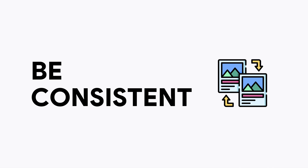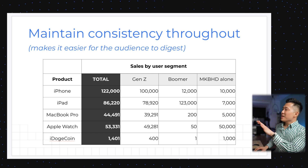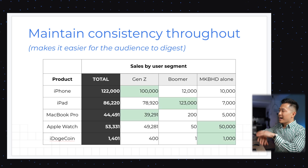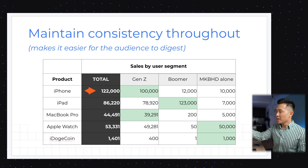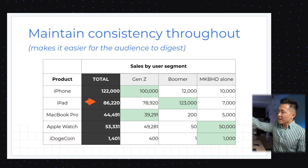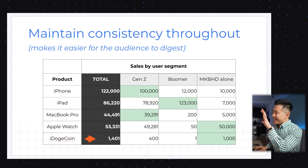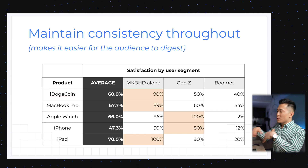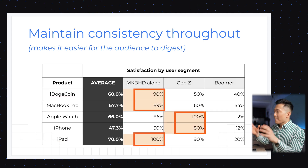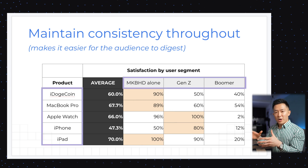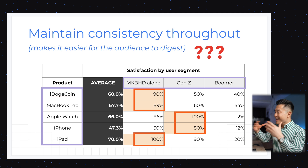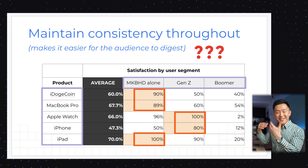Table visualization tip number four: be consistent with your style and format throughout the presentation. For example, you can see that I use the green highlight to highlight the highest numbers here, and the products are listed in descending order from the most sales to the least. Not only does this next table use a different color to highlight the highest percentages, but the headers have all changed as well. And this can be very disarming to the audience who again are looking for pattern and consistency.